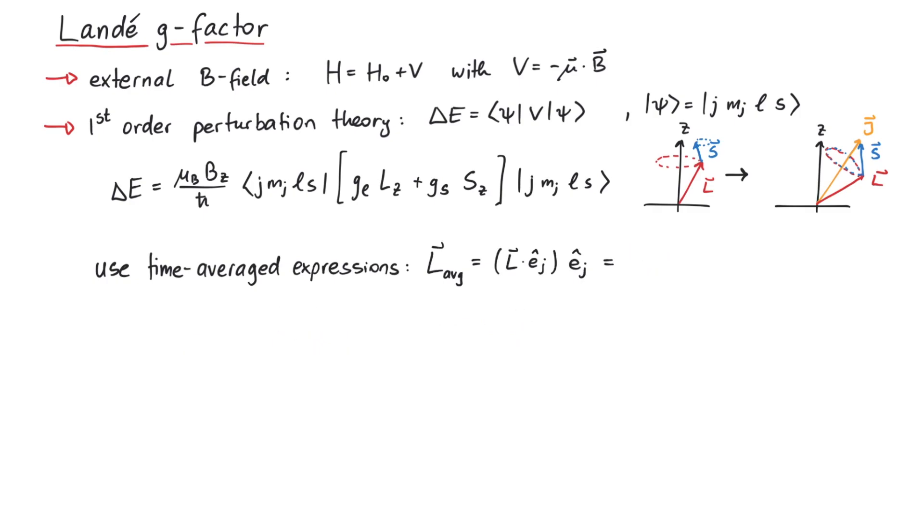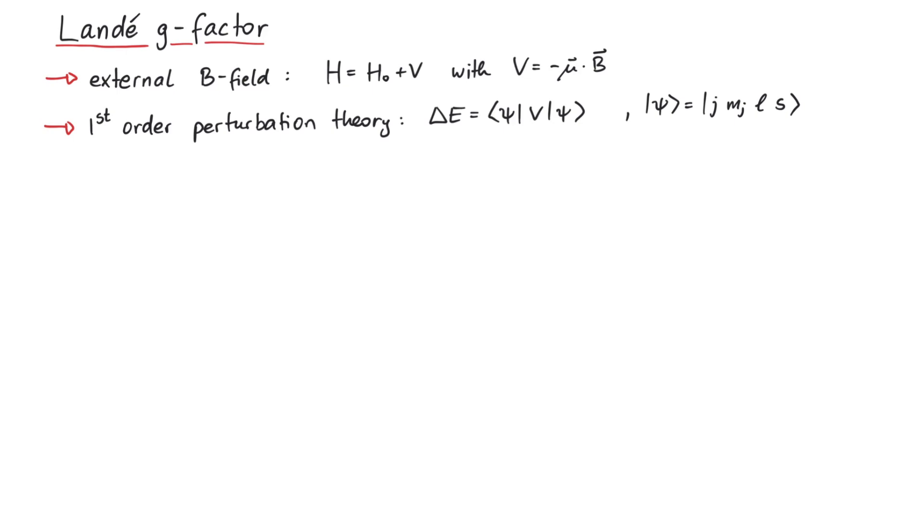However, we don't want to take the time-averaged expressions for l and s for granted. Instead, let's find out why those time-averaged expressions occur. So let's go back to the expression for the energy shift. Since b is a constant, we can write it outside. What remains is a matrix element of the magnetic moment vector. At this point, we can use the powerful Wigner-Eckert theorem to guide us. In particular, in case of a vector operator, we can use a special case of the Wigner-Eckert theorem called the projection theorem.